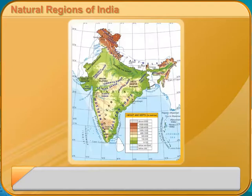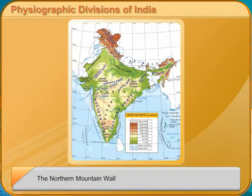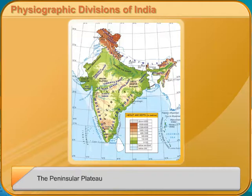Natural Regions of India. Look at the various landforms found in India. India has five distinct physical features: the Northern Mountain Wall, the Northern Plains, the Great Indian Desert, the Peninsular Plateau, and the Coastal Plains and Islands.